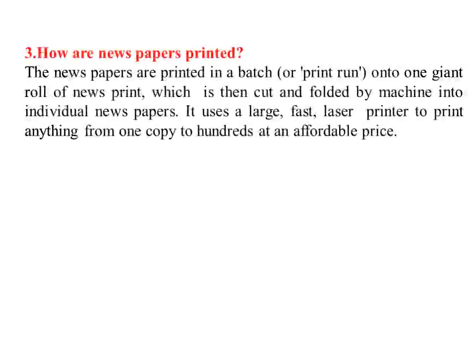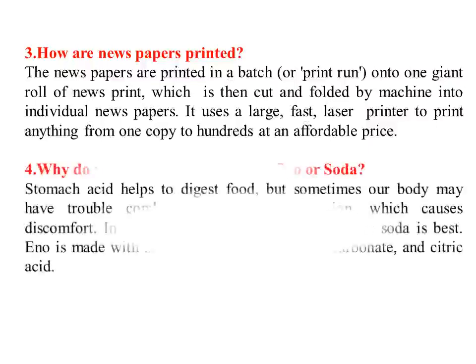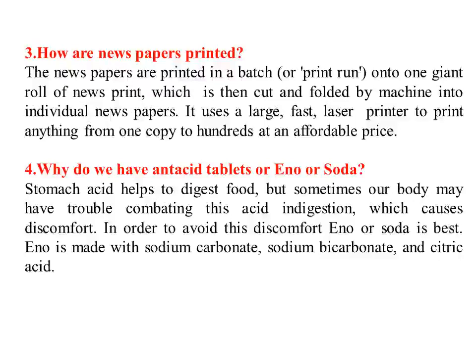Third question: how are newspapers printed? Newspapers are printed in a batch onto an uncut roll of newsprint, which is then cut and folded by machine into individual newspapers. You can write in a simple way. Fourth question: why do we have antacid tablets or Eno or soda? For what purpose are we using tablets and Eno or soda? You have to write at least two or three sentences. First write from the answers in the notebook to your rough notebook, then close the book, learn the answers perfectly, write them down again, and check clearly. You will never forget if you write two or three times.